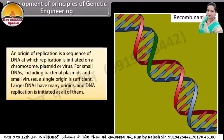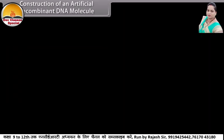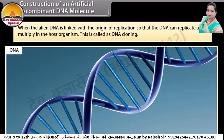The host DNA combined with foreign DNA or artificial DNA is called recombinant DNA. An origin of replication is a sequence of DNA at which replication is initiated on a chromosome, plasmid, or virus. For small DNAs, including bacterial plasmids and small viruses, a single origin is sufficient. Larger DNAs have many origins and DNA replication is initiated at all of them. When the alien DNA is linked with the origin of replication so that the DNA can replicate and multiply in the host organism, this is called DNA cloning.